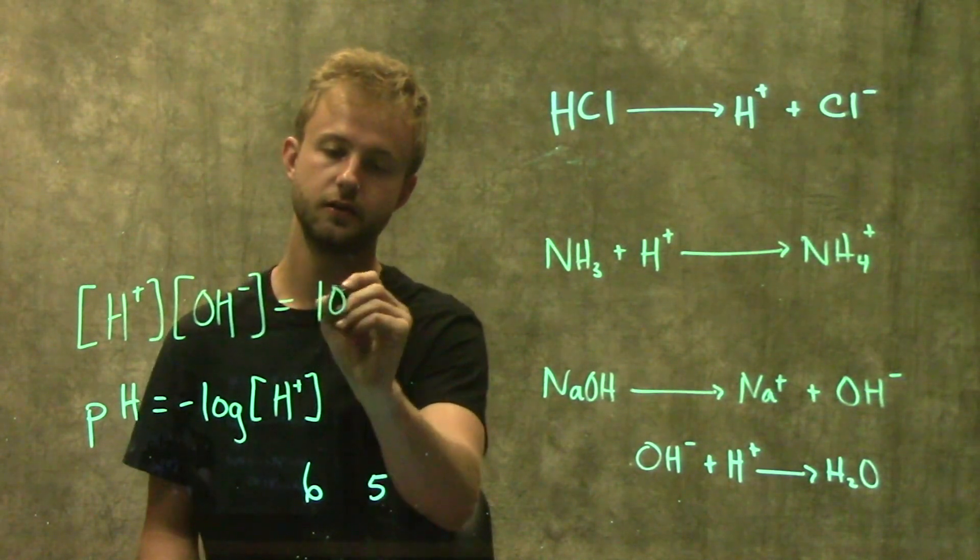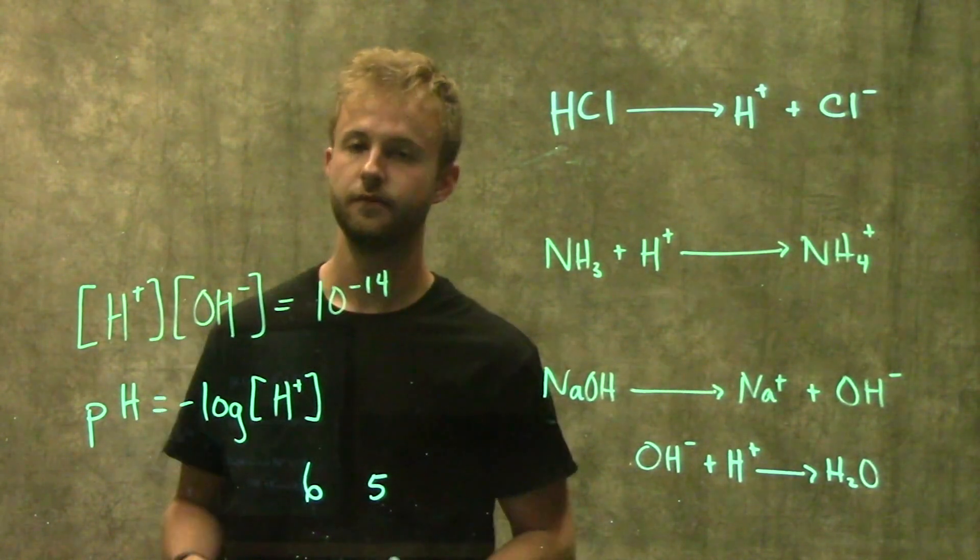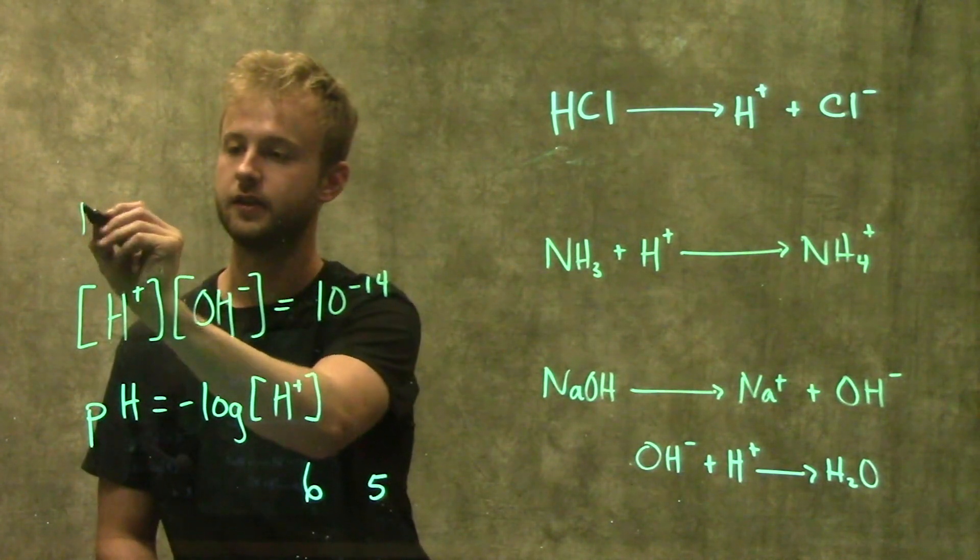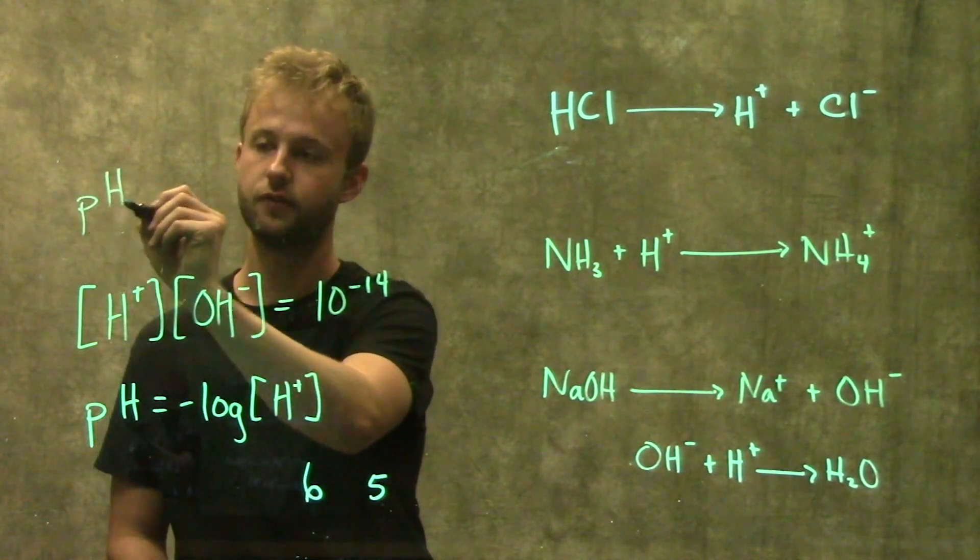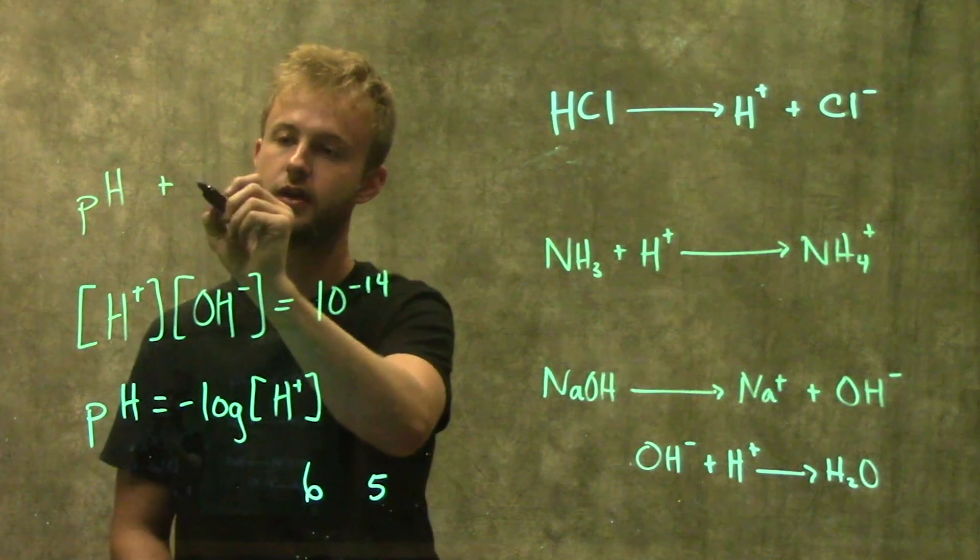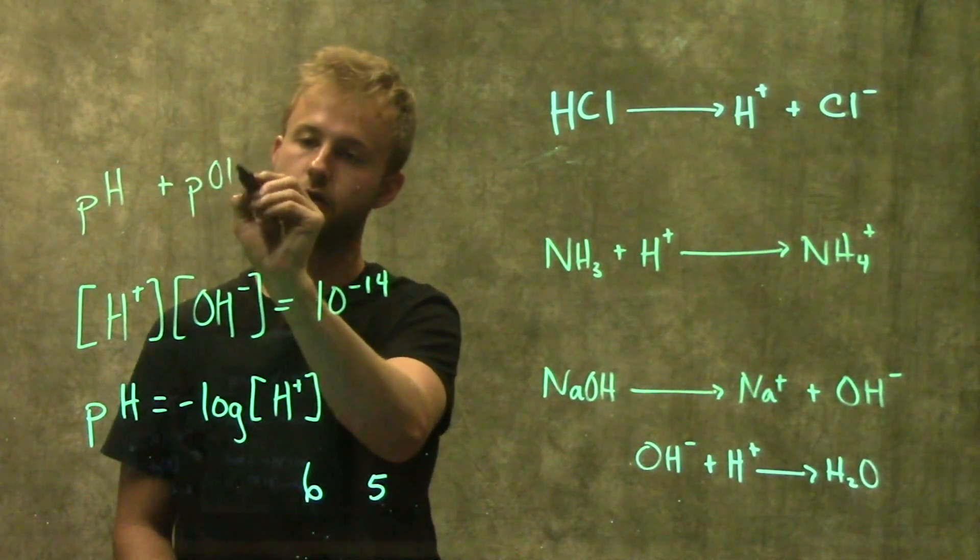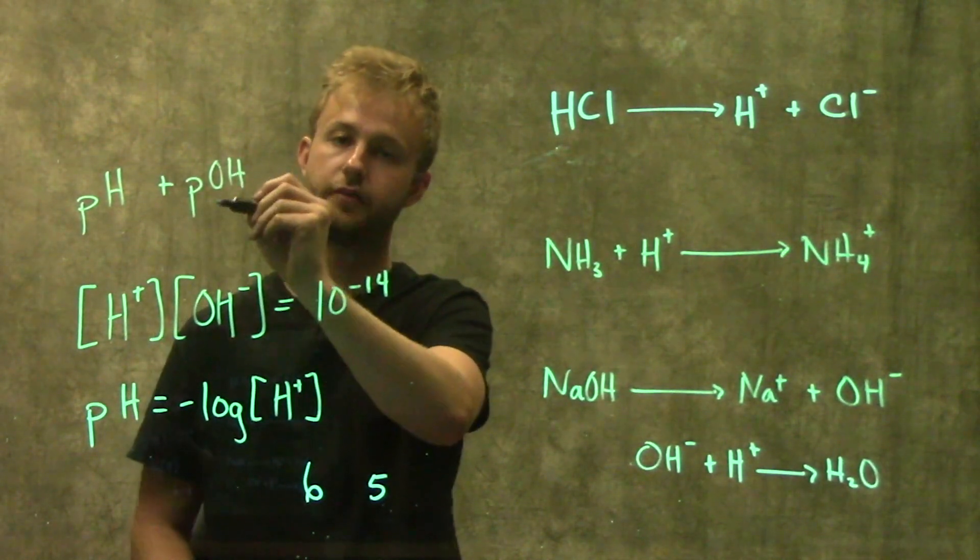The first relationship is that the concentration of hydrogen atoms times the concentration of hydroxide ions equals 10 to the negative fourteenth.